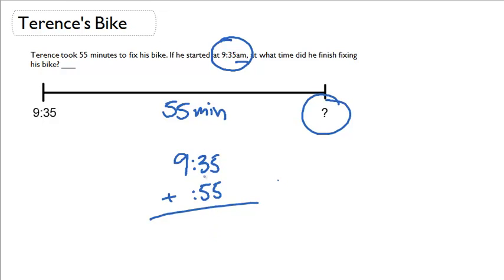Ooh, 90. That means we need to take 60 of those minutes and add it into an hour. So now we get 10 and 30.